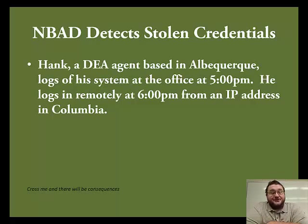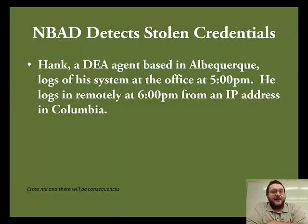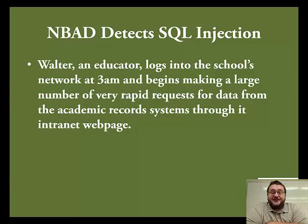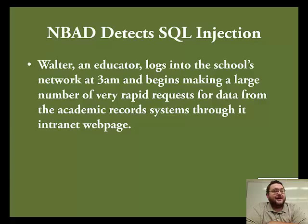NBAD detecting stolen credentials: Hank, a DEA agent based in Albuquerque, logs off at the office at 5 o'clock. NBAD knows that. He logs in again at 6 — not unheard of — but this time he logs in from Colombia. Since supersonic commercial transport no longer exists, there's no way to get from Albuquerque to Colombia in an hour, so obviously that's abnormal and indicates someone obtained the DEA agent's credentials. Similarly, Walter, an educator, logs into his school's network at 3 a.m. — very unusual for a high school teacher — and begins making a large number of rapid queries against a SQL database through the intranet web page, which looks like a SQL injection attack.